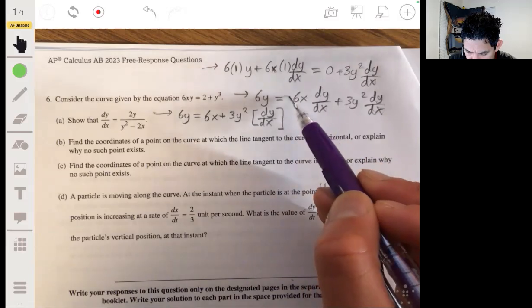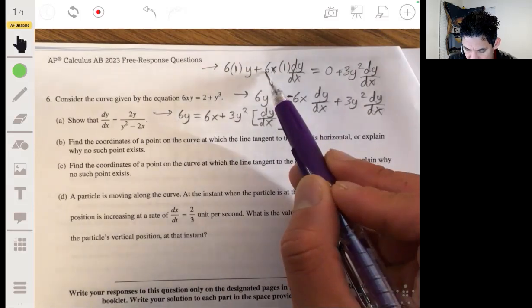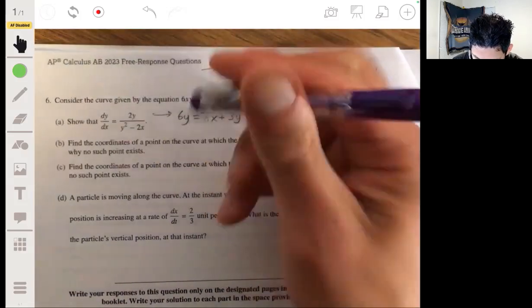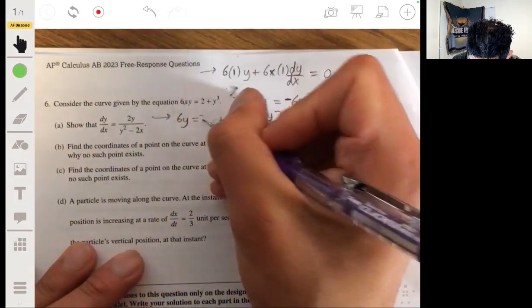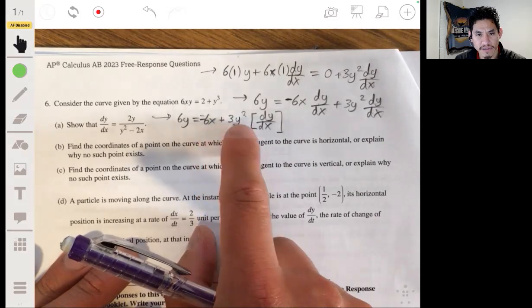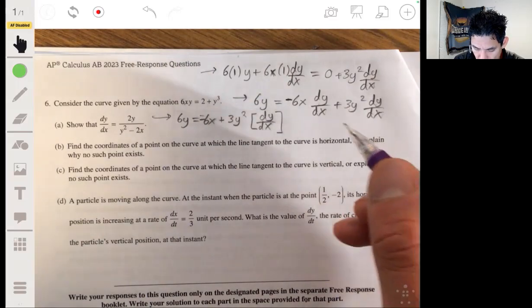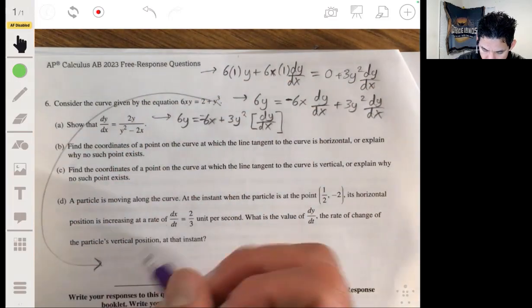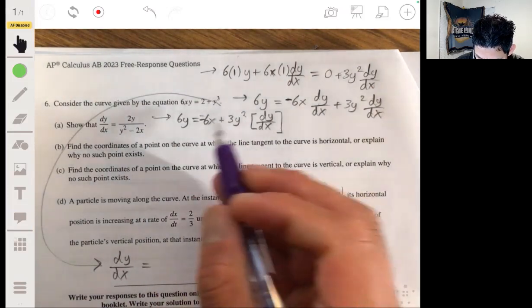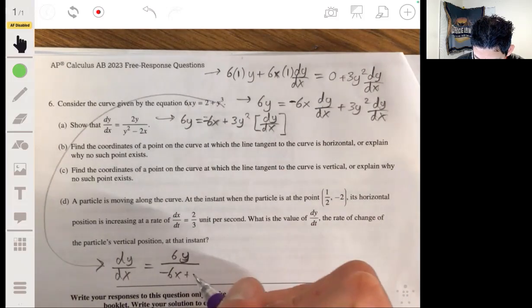All right, there we go. So times dy/dx. And I missed the minus sign. So here, let me add that minus sign. So this will be a minus 6 here because we're subtracting the 6x dy/dx. That was a close one. So now we just divide each side by this group, negative 6x plus 3y. I was hoping to fit it in there, but I'm just going to have to go down here.